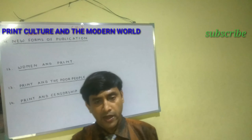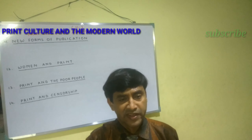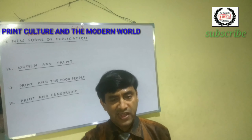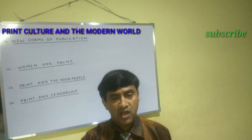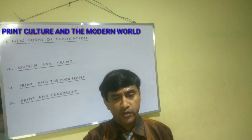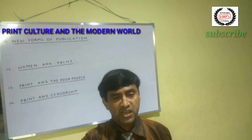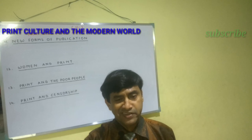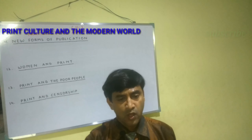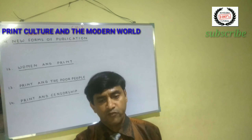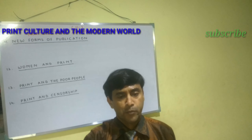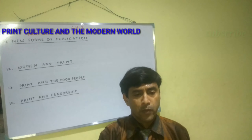Jyotiba Phule's Gulamgiri exposed the ill treatment of low-caste people. Dr. Ambedkar and E.V. Ramasami Naicker wrote powerfully against untouchability. Chhote aur Bade ka Sawal by Kashibaba exposed the links between caste and class exploitation. A Kanpur mill worker, writing under the name Sudarshan Chakra, wrote a collection of poems called Sachchi Kavitayen, highlighting the exploitation of the poor, which were read all over India.